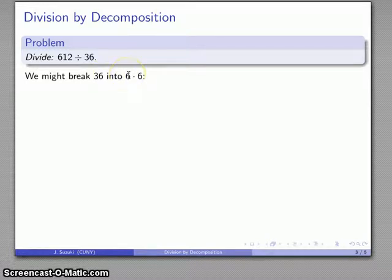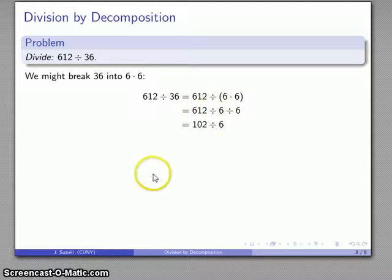36 is, among other things, 6 times 6. So if I want to divide by 36, I can divide by 6 times 6, and by the preceding, that says I can divide by 6 and then divide by 6. So I'll go ahead and do those divisions one at a time: 612 divided by 6 is 102, divided by 6 is 17.